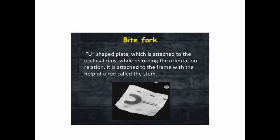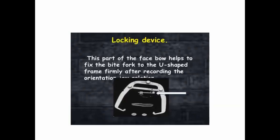This is the bite fork — a U-shaped plate which is attached to the occlusal rim while recording the occlusal relationship. It is attached by means of a stem. This stem connects the bite fork U-shaped plate to the U-shaped frame.